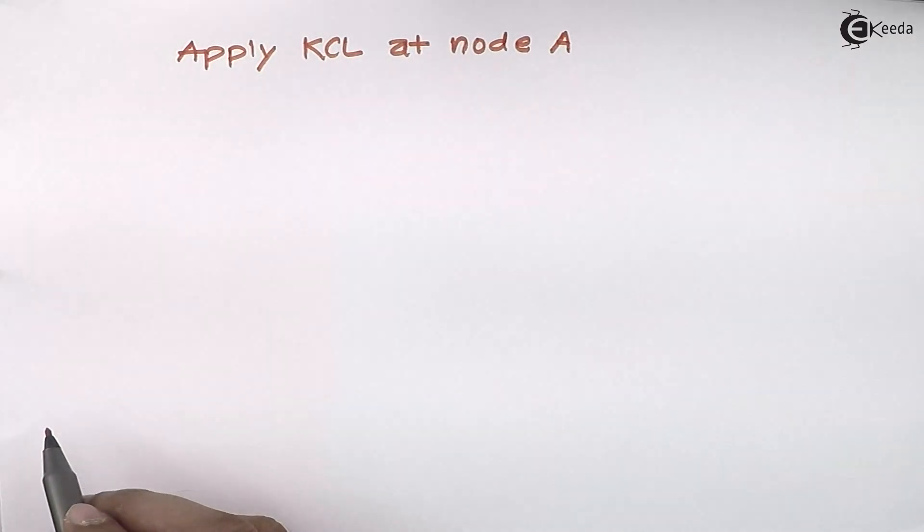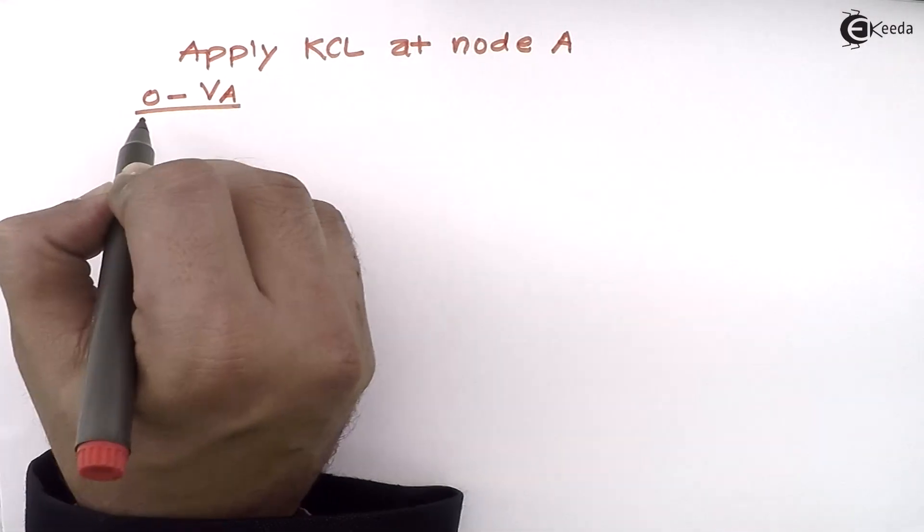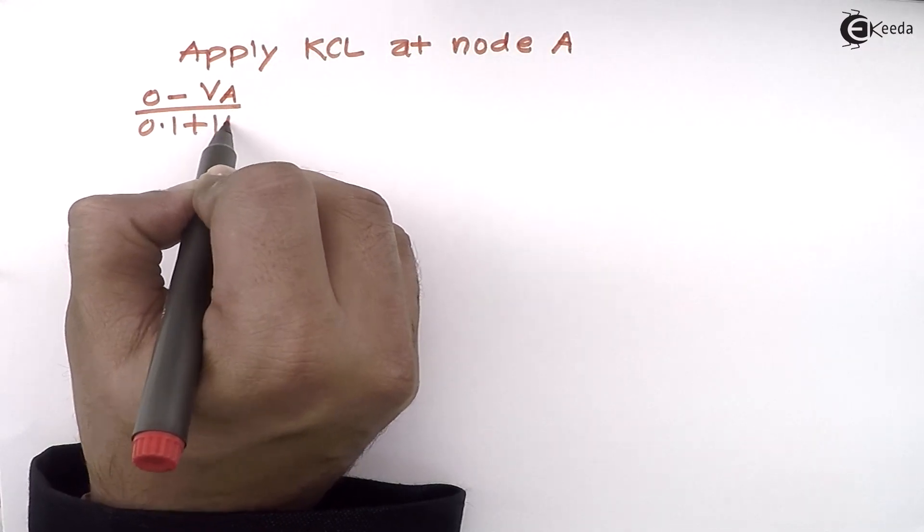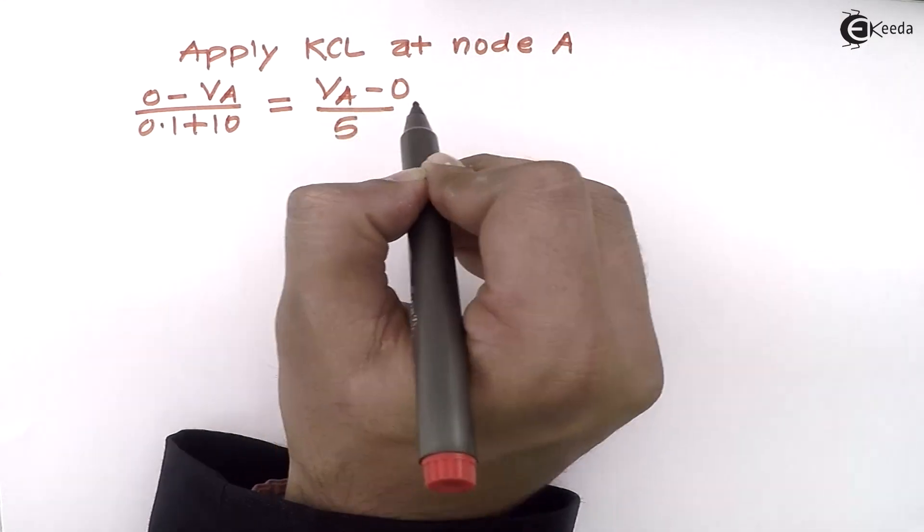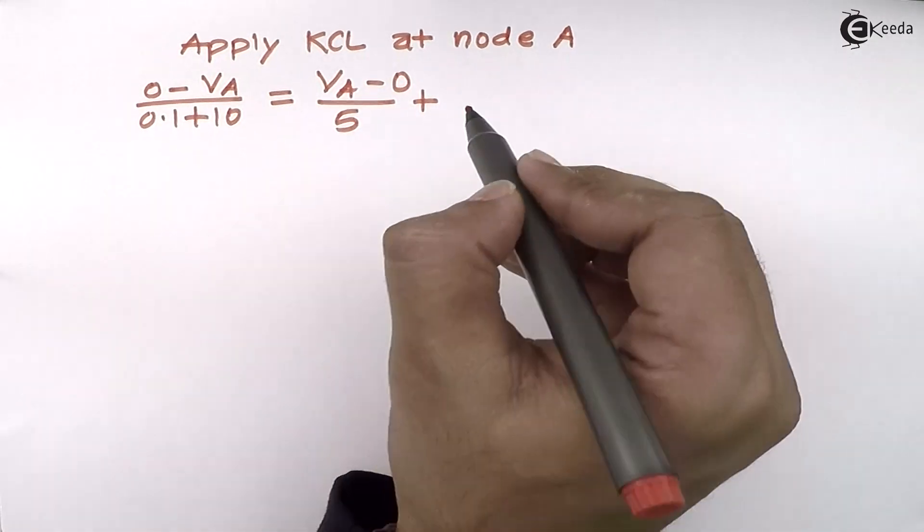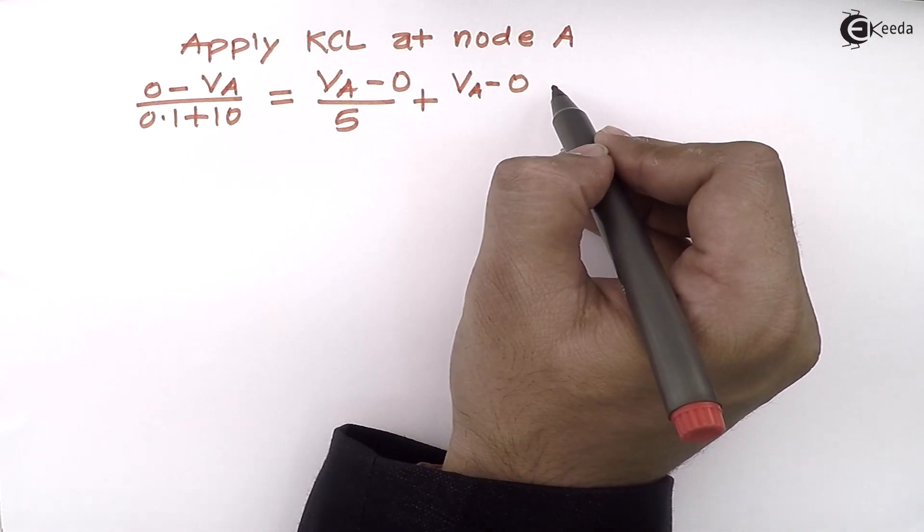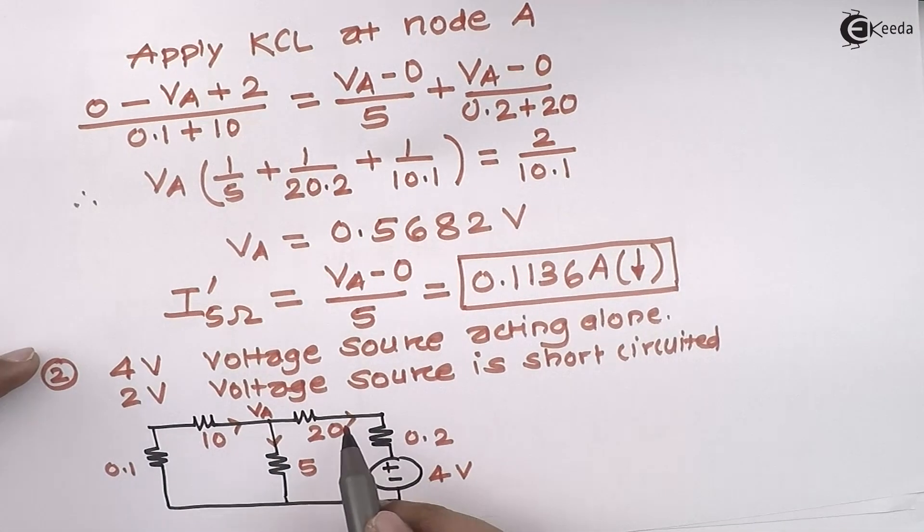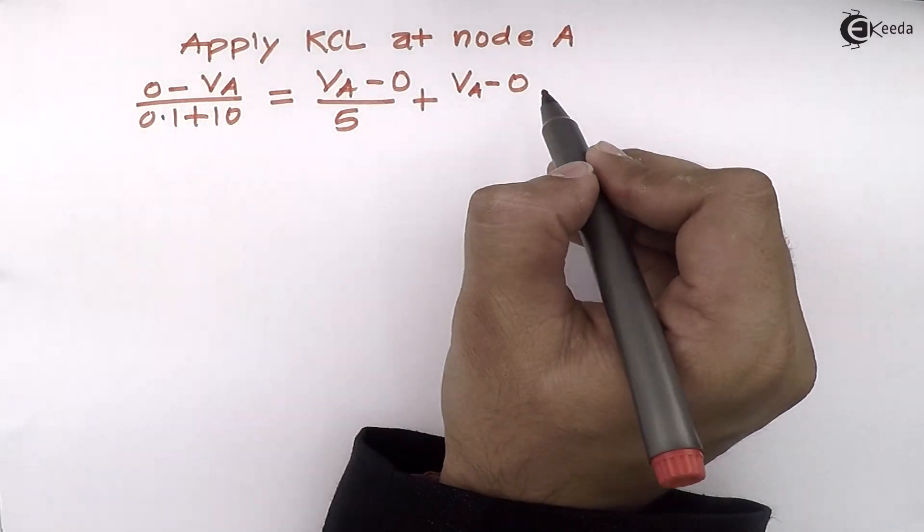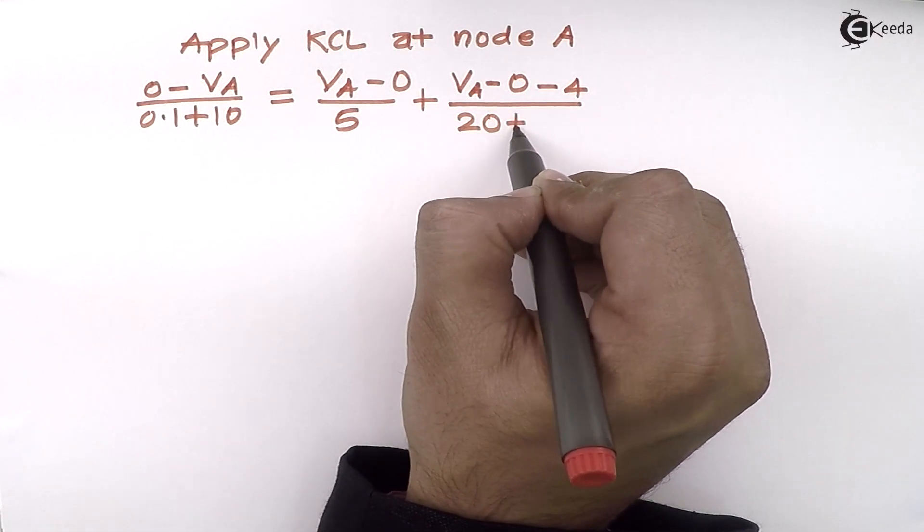If I apply KCL at node A, I am getting (0 - VA) divided by (0.1 + 10) as incoming current. Outgoing current is (VA - 0) divided by 5. One more outgoing current is (VA - 0). In the direction of current, which is outgoing, I am having a voltage drop. Check here: in the direction of current, the polarity is plus to minus, voltage drop, so minus 4, divided by (20 + 0.2).